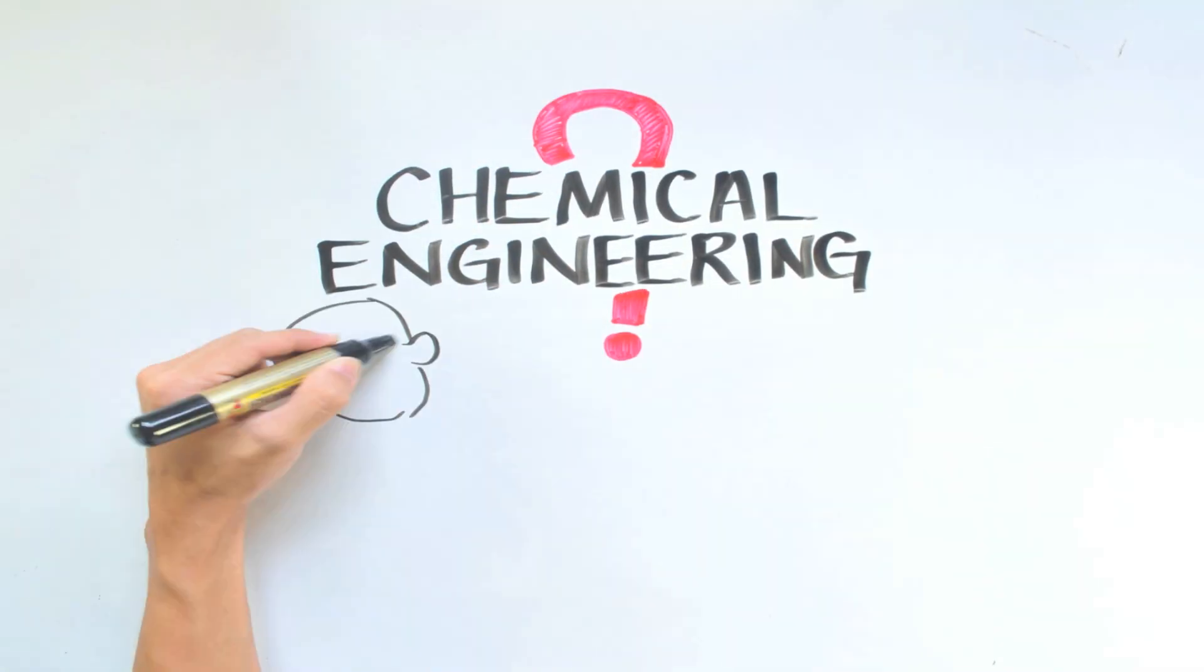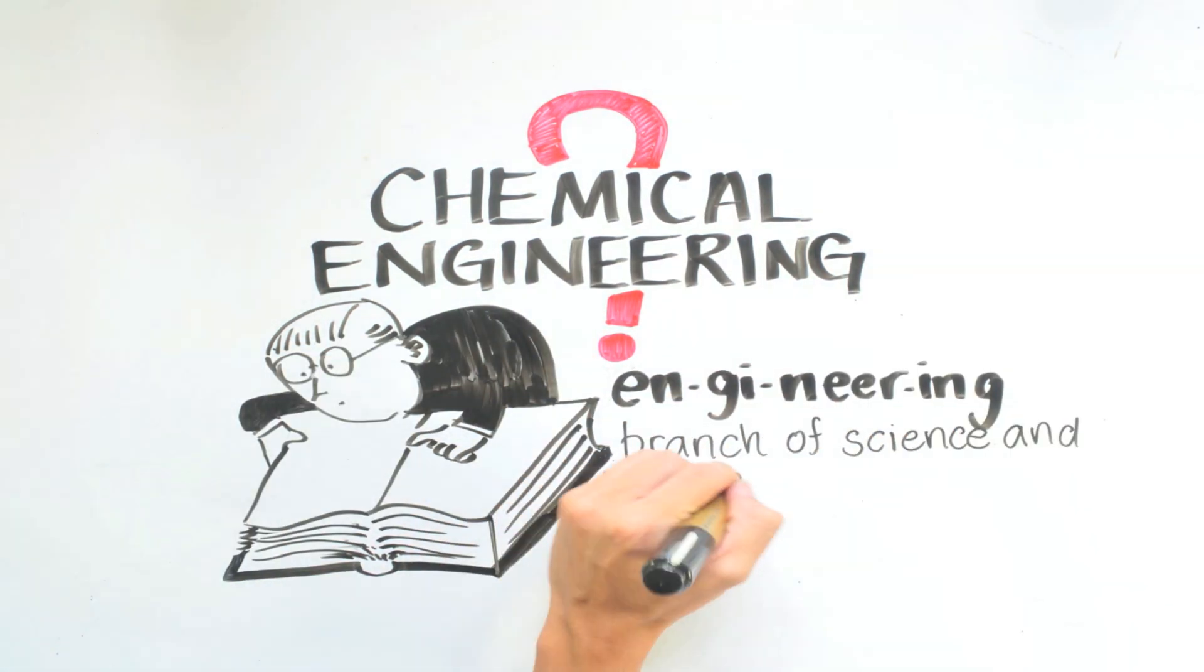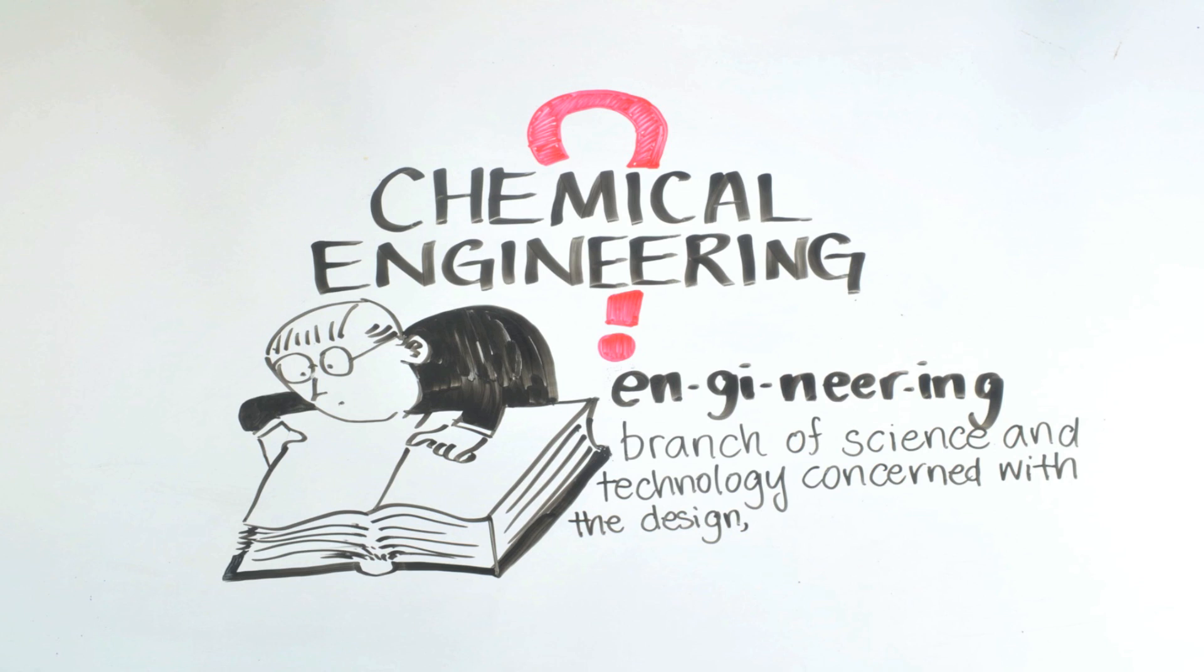What is chemical engineering? By definition, engineering is the branch of science and technology concerned with the design, building, and the use of machines, engines, and structures.